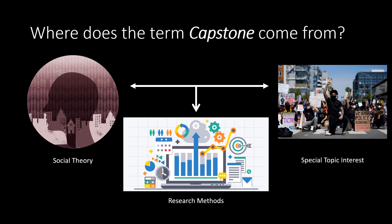By now you've taken multiple theory classes, multiple classes on research methods, and courses within your specialization area — whether that's families and intimate relationships, health and inequalities in health and healthcare outcomes, or criminology. You've developed specialization in a specific area of study.